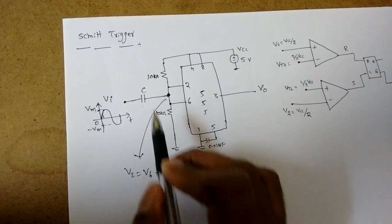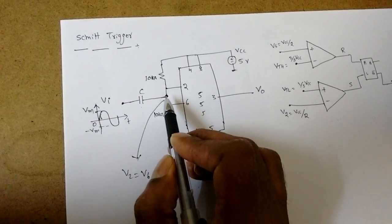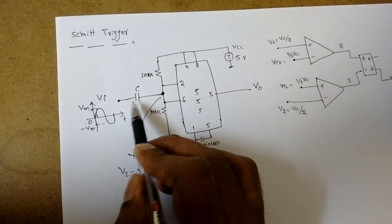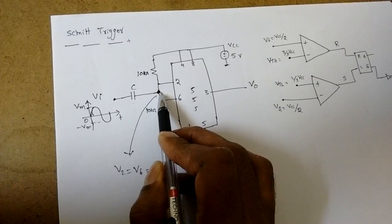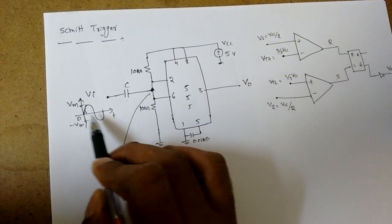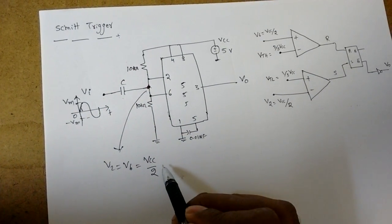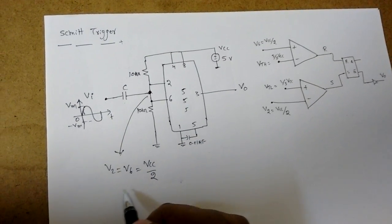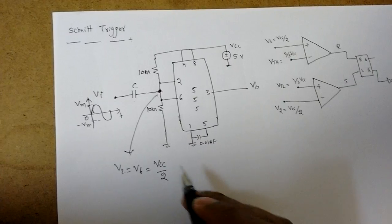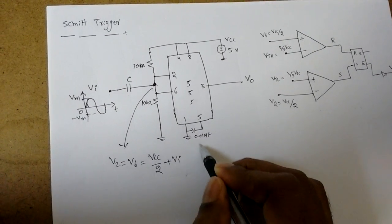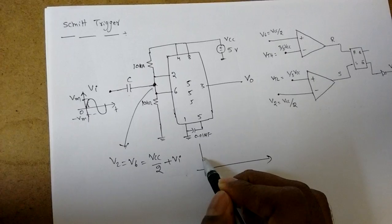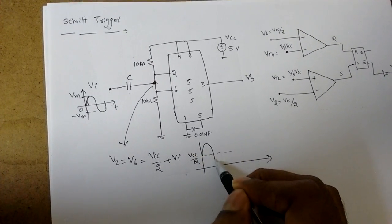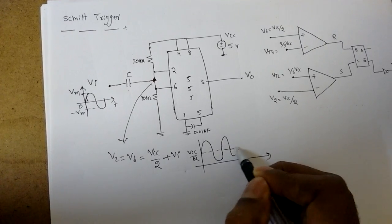Now, the moment DC analysis happens it will be simply DC voltage as VCC by 2. Whenever we apply sinusoidal signal the capacitor behaves as short circuit, which will couple the sinusoidal signal or AC signal across the 2 and 6 terminal. So after application of VI, V2 V6 will become VI - that is the DC level will be shifted by VCC by 2, and upon this there is an input signal VI.